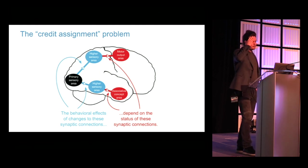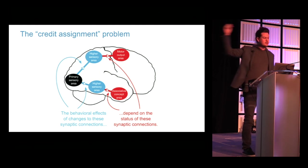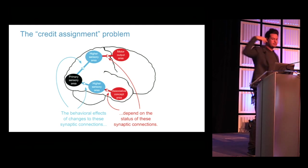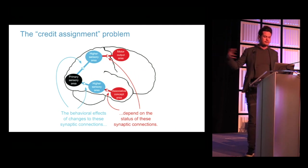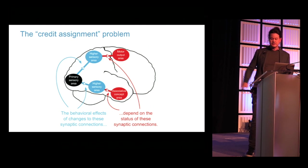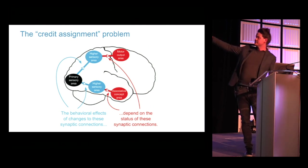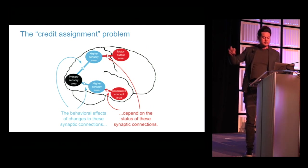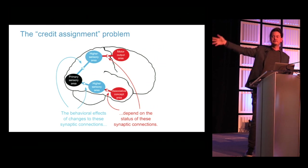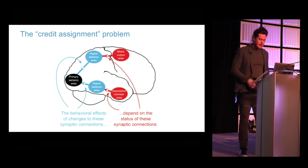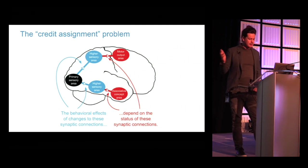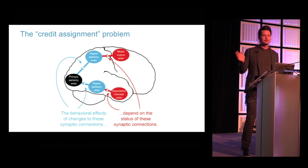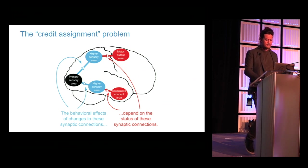The problem that Backprop solves is the credit assignment problem in deep-layered structures, which we are certainly faced with in the brain — you have to adjust synapses earlier on so they will have the desired effects downstream. Most people in this room have probably coded a Backprop network at some point.